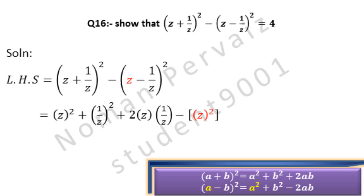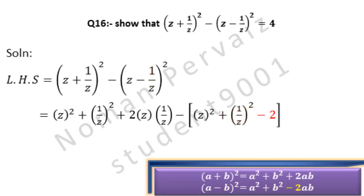Applying the second formula to (z - 1/z)² because it involves a minus sign: a² is z², plus b² is (1/z)², minus 2ab where a is z and b is 1/z.